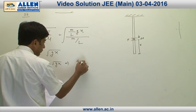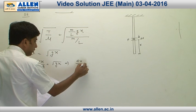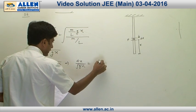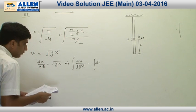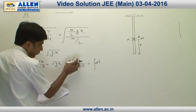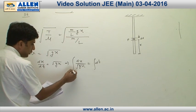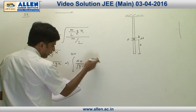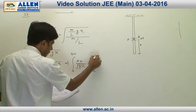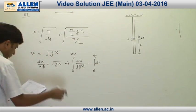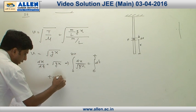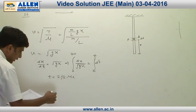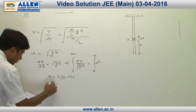We can integrate it for time and distance. In the distance limits we put 0 to 20, and in the time limits we put 0 to t. From here we get the value of time as 2 root 2 seconds. Therefore, the correct answer is option 4.